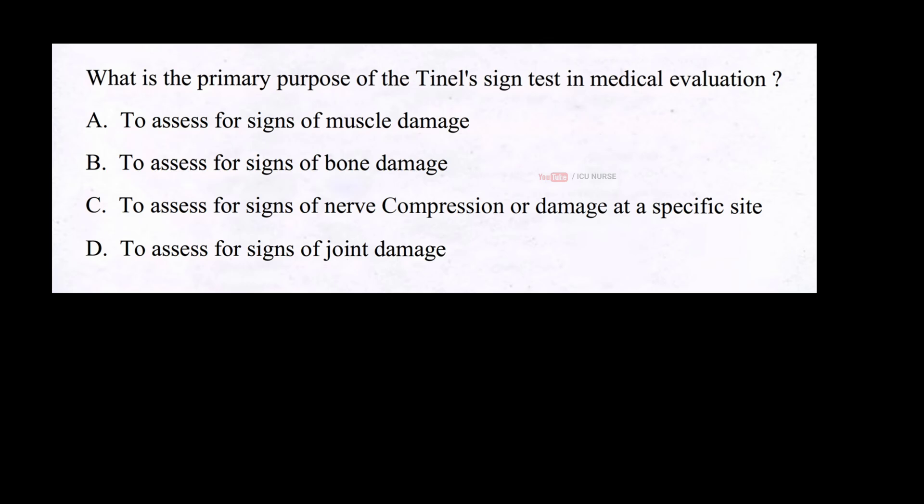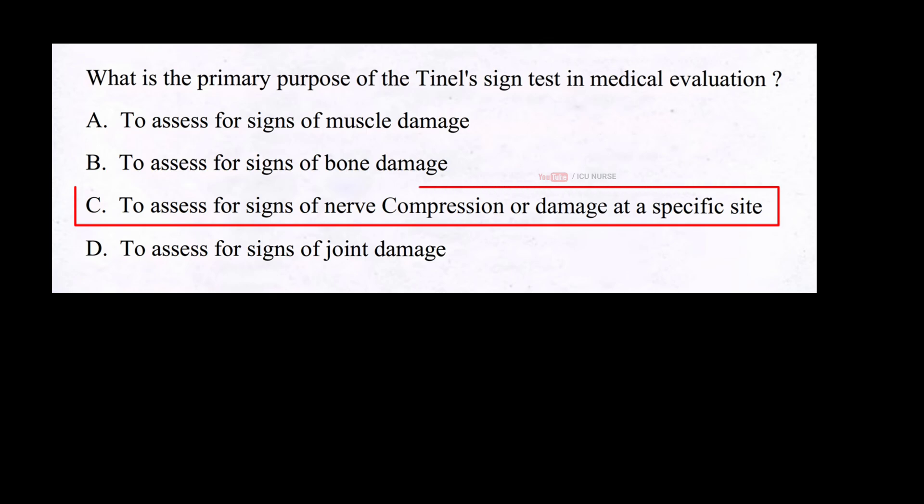What is the primary purpose of the Tinel's sign test in medical evaluation? A. To assess for signs of muscle damage. B. To assess for signs of bone damage. C. To assess for signs of nerve compression or damage at a specific site. D. To assess for signs of joint damage. And the correct answer is C: to assess for signs of nerve compression or damage at a specific site.